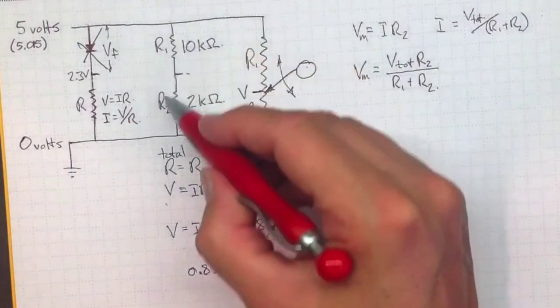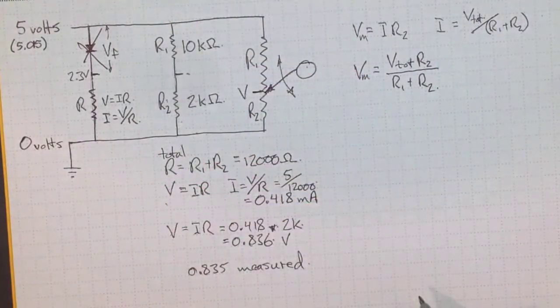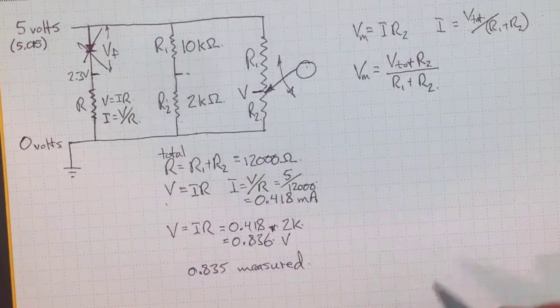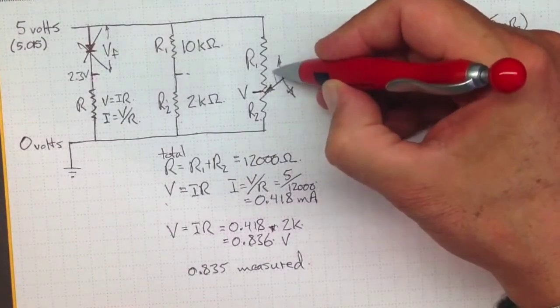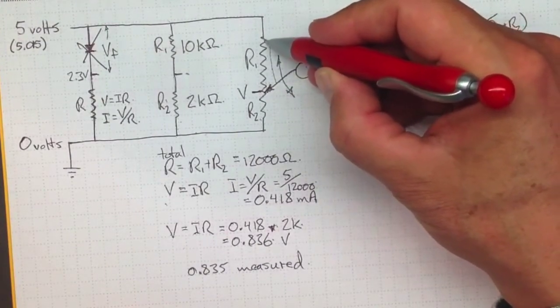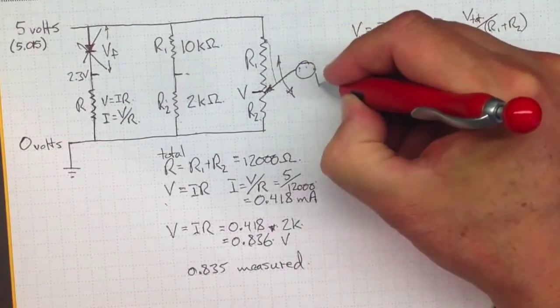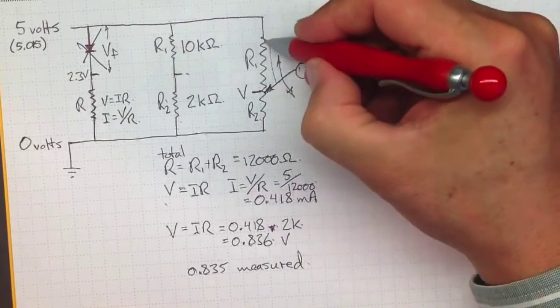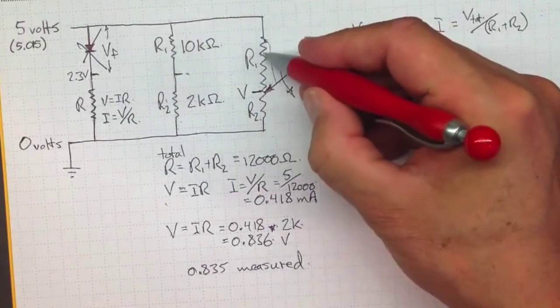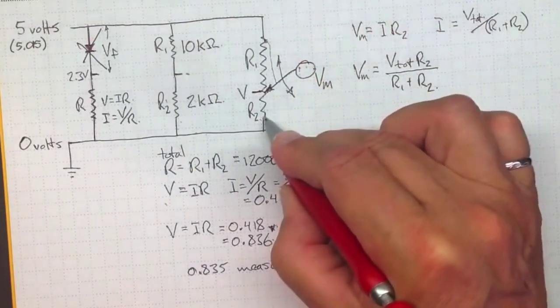Or you can just work through it step by step like we did over here. And what we see is as we move this slider up and down, when it moves up to here, our measured voltage, the VM that we get on our slider, will be 5 volts. When we move down here, we'll get down to 0 volts.